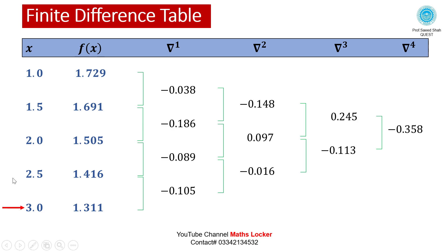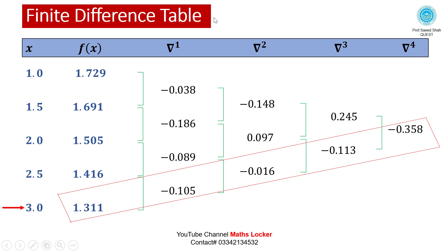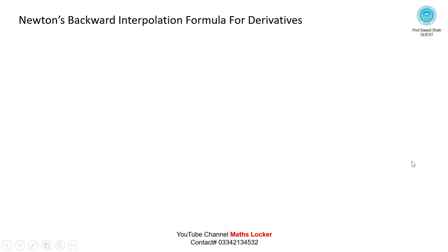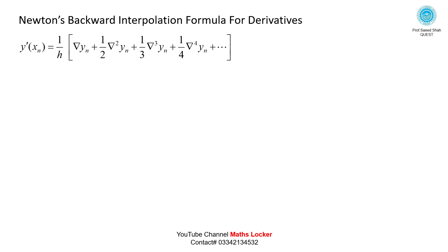We want to calculate the derivative below the center at x = 3. Mark this value: f(3) = 1.311. Draw the backward diagonal. The values lying in the diagonal are: first difference = −0.105, second difference = −0.016, third difference = −0.113, fourth difference = −0.358. Writing Newton's backward interpolation formula: y'(xn) = (1/h)[ΔYN + (1/2)Δ²YN + (1/3)Δ³YN + (1/4)Δ⁴YN + ...].